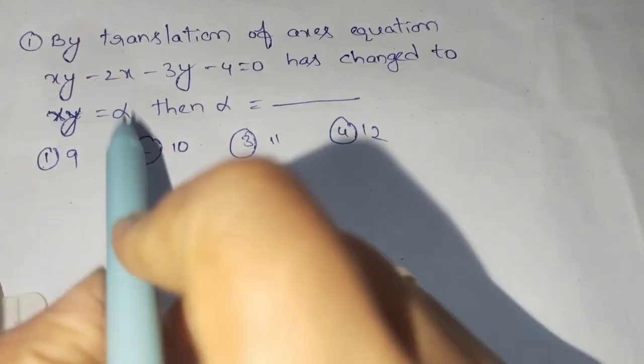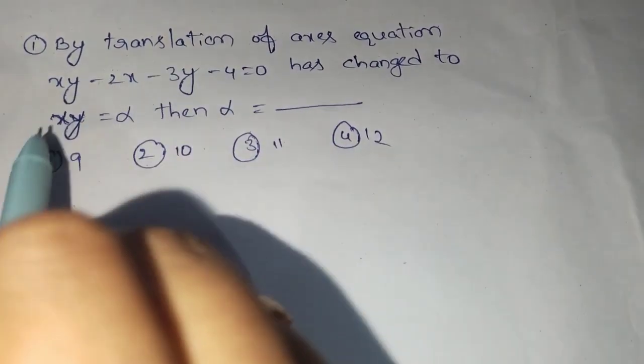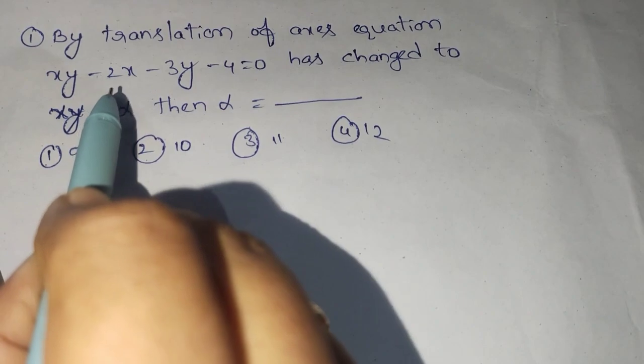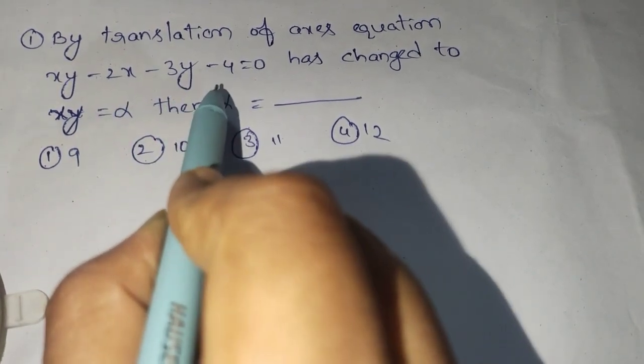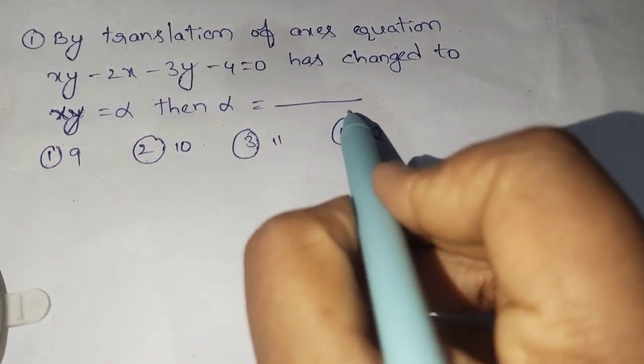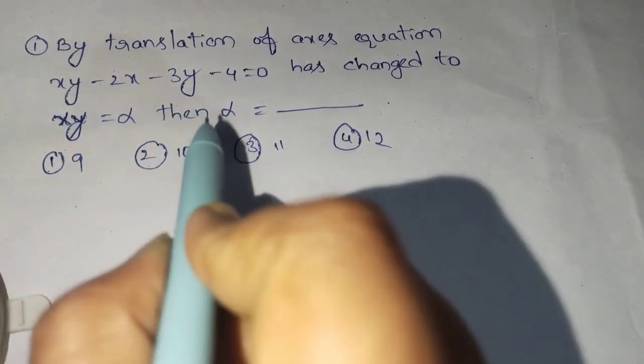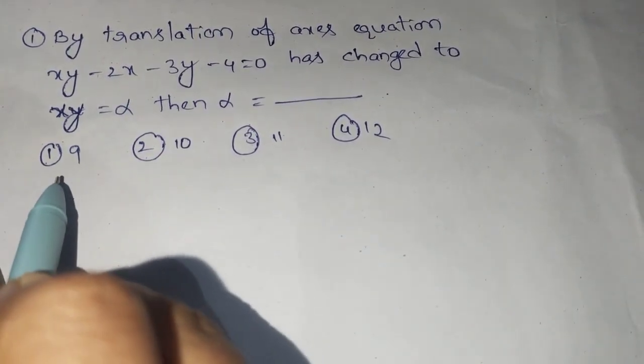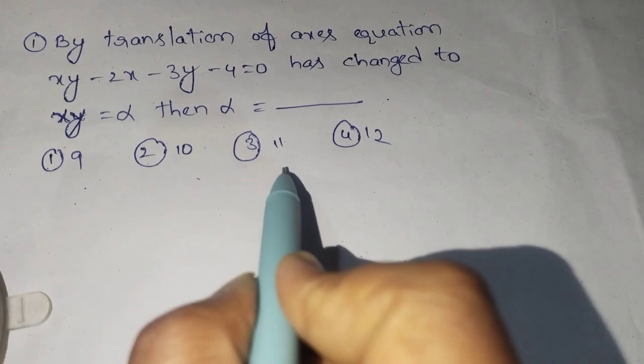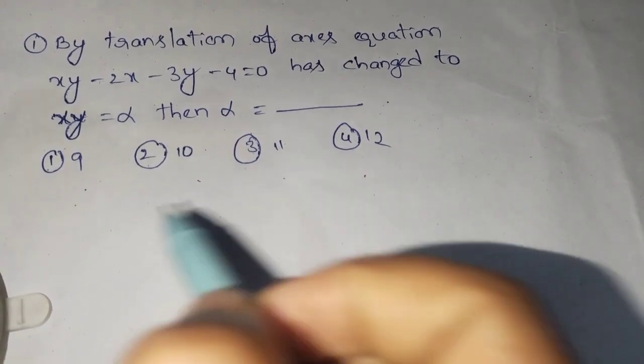The given question is: by translation of axis, equation xy minus 2x minus 3y minus 4 equals 0 has changed to xy equals alpha. Then find alpha. The given options are 9, 10, 11, and 12.